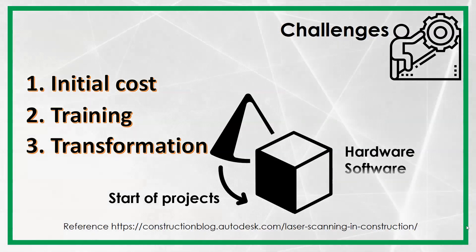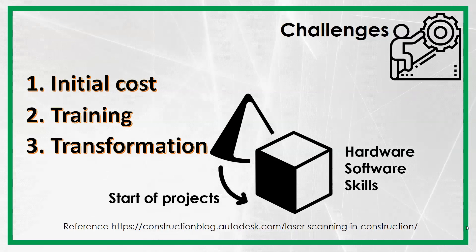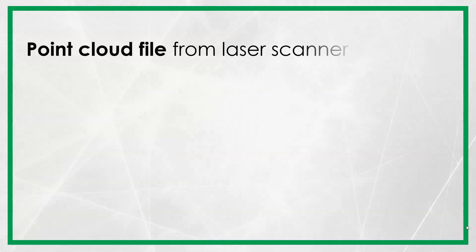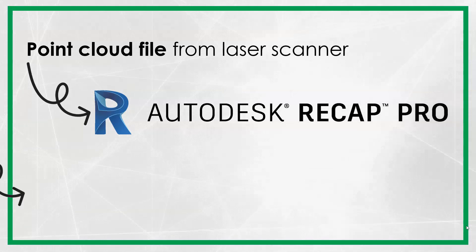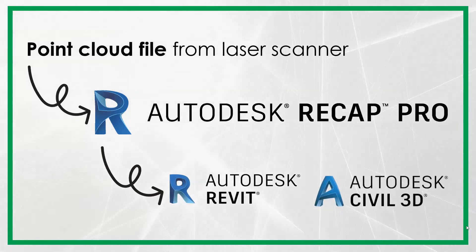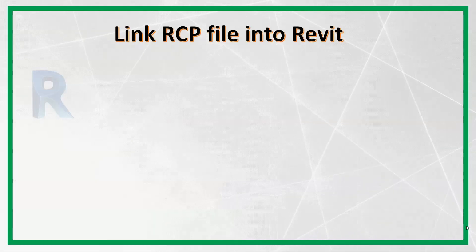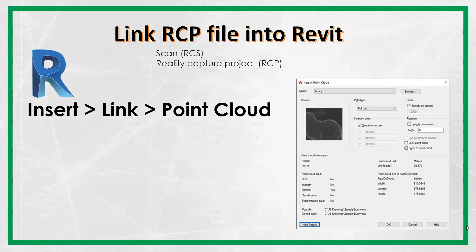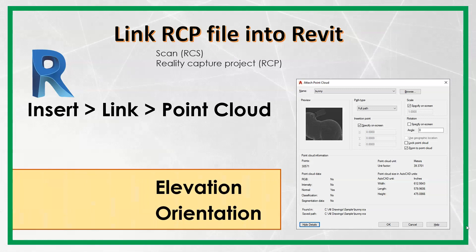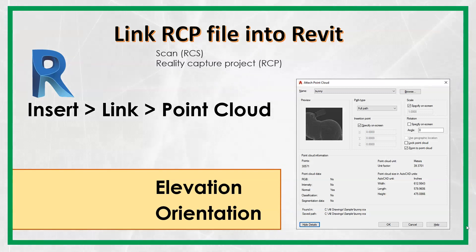Do your study — learn about the hardware, software, and skills required. When you have the point cloud data from the laser scanner, you can use Autodesk ReCap Pro software to import and convert the scan file data to a point cloud format called RCP, which can then be edited in other software applications such as Autodesk Revit or Civil 3D. To link the captured data from a laser scanner into Revit, you should use Insert, Link, and then Point Cloud. Make sure that the elevation of your point cloud linked model is similar to your building, and that the orientation of the linked RCP file aligns with the true north on your Revit model.